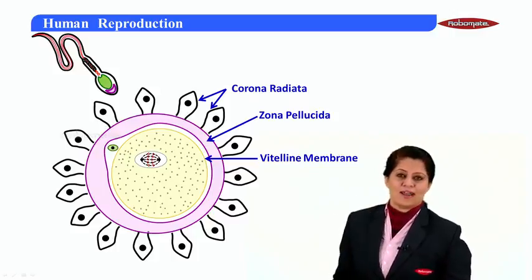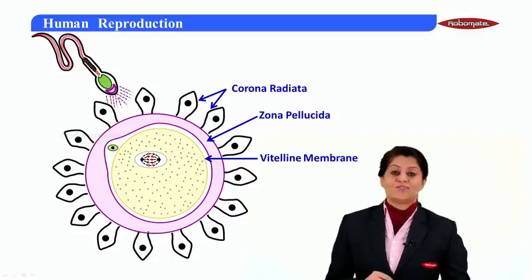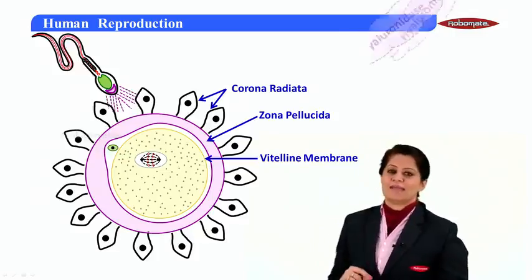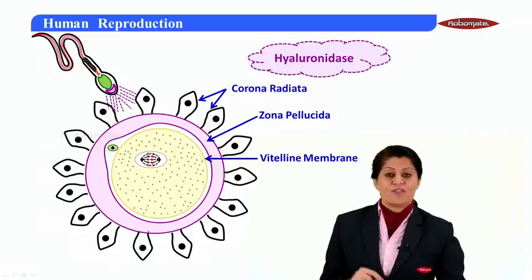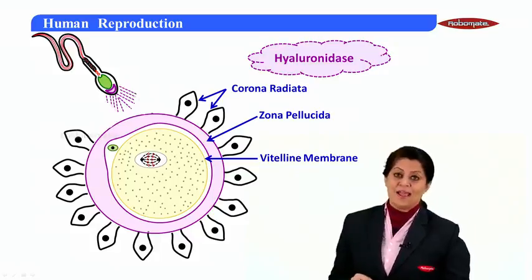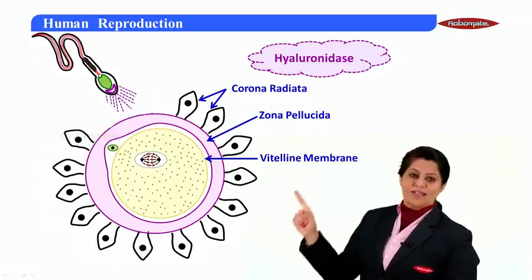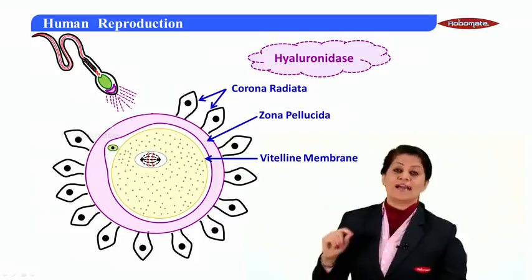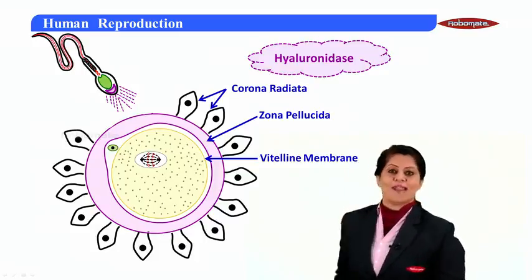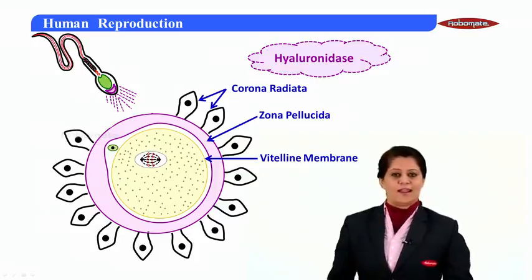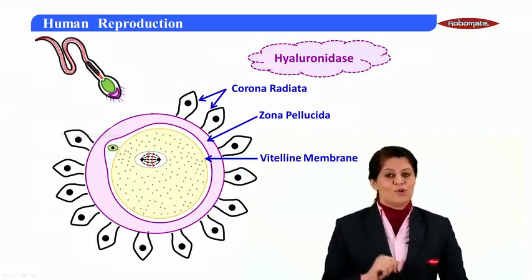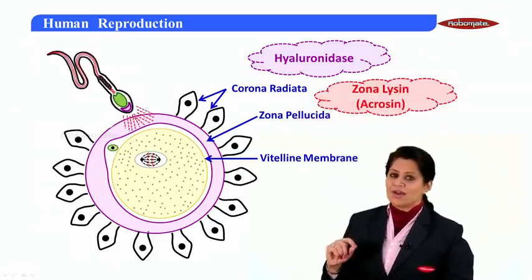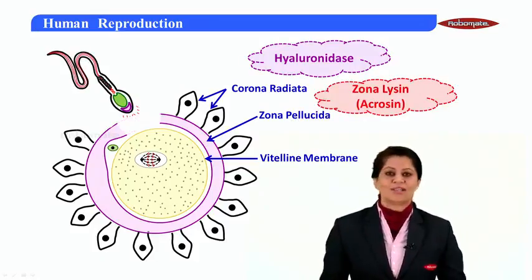For the first layer, corona radiata, the acrosome of the sperm releases an enzyme called hyaluronidase, which dissolves the cells of this layer. The corona radiata cells were glued by hyaluronic acid, and that hyaluronic acid is destroyed by hyaluronidase. For the second layer, zona pellucida, it is penetrated by the release of an enzyme called acrosin or zona lysin, which dissolves that layer.